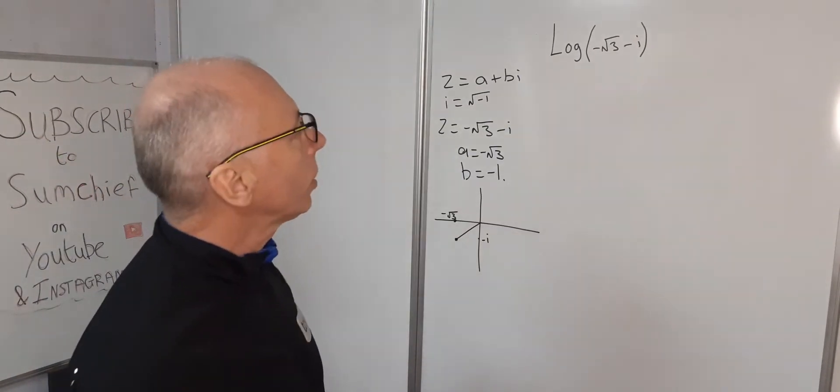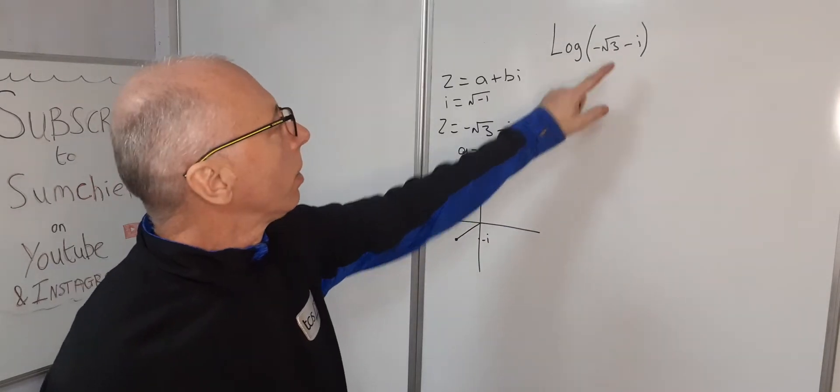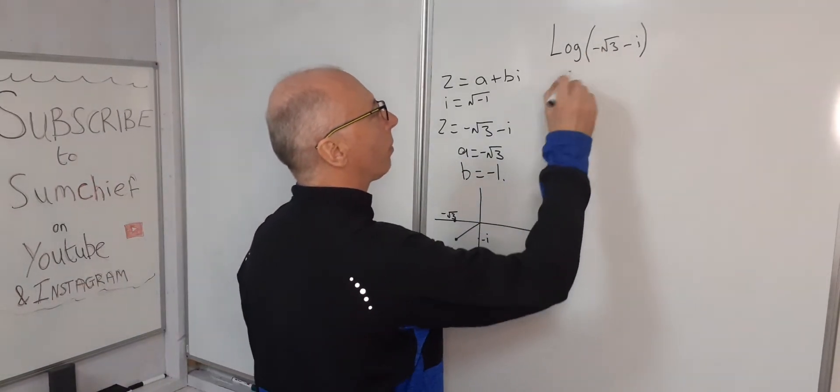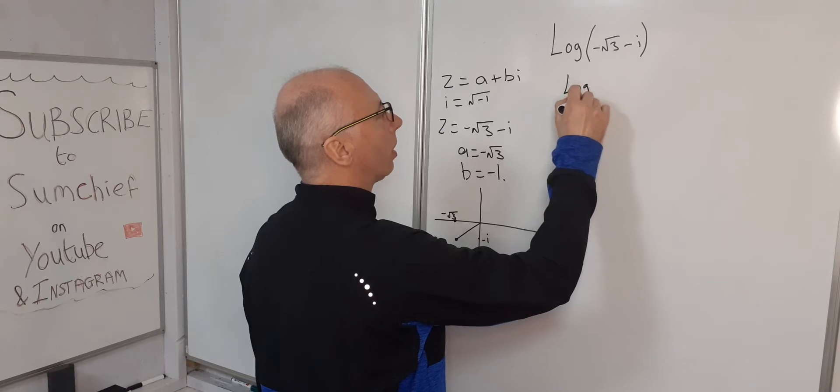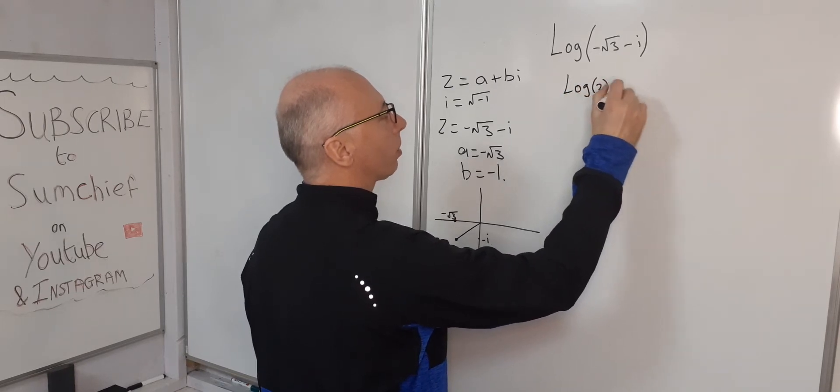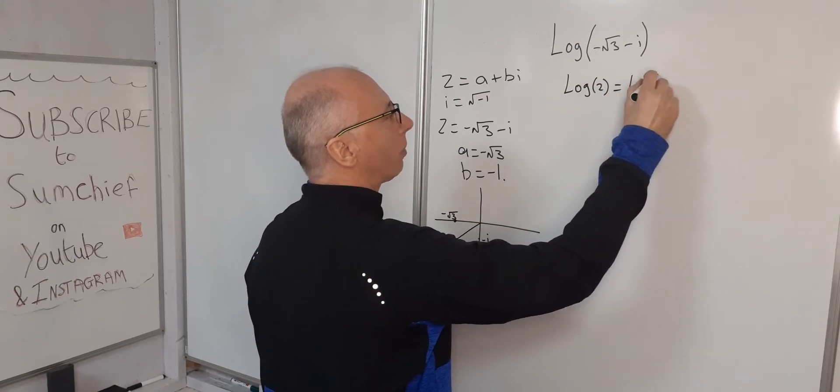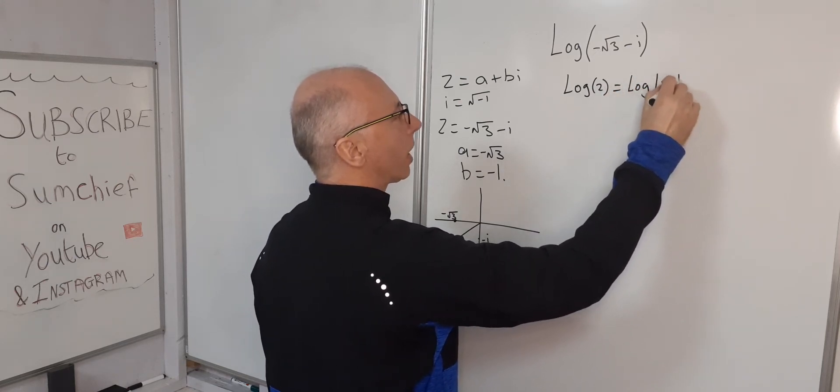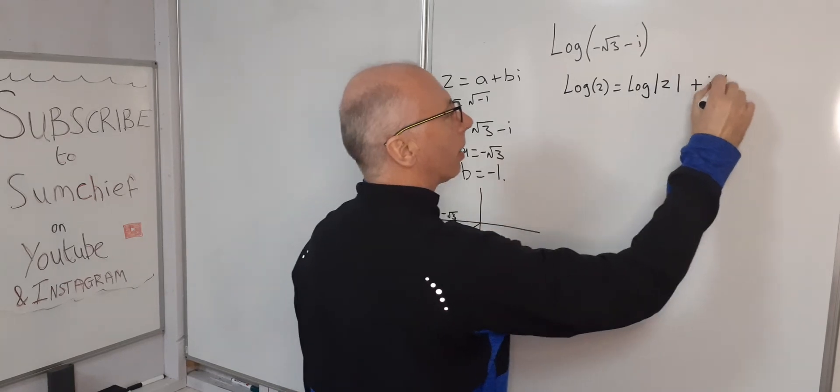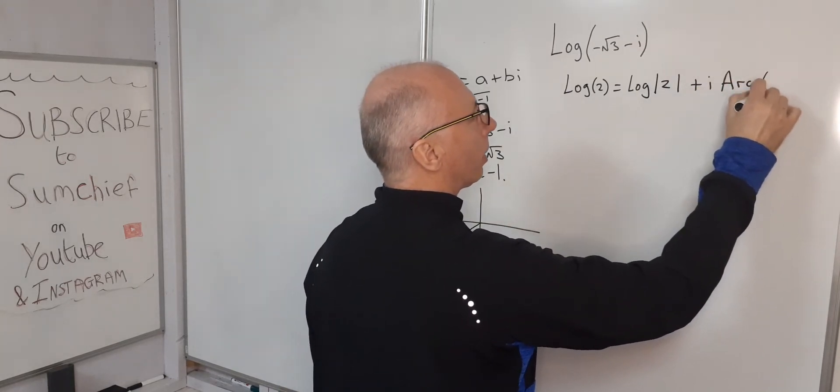Okay, right now back to the question, how do we work this out? So the formula for log of any number, so log of z equals, it's the modulus, so log of the modulus of z plus i argument of z.